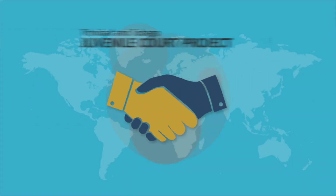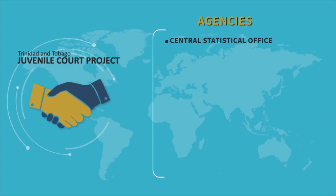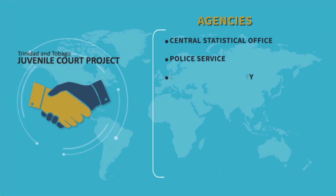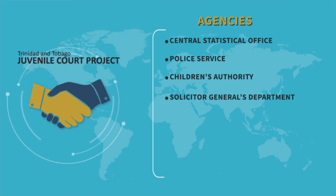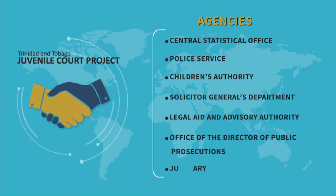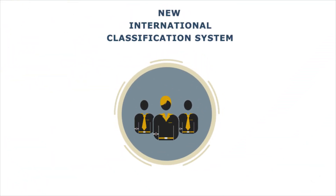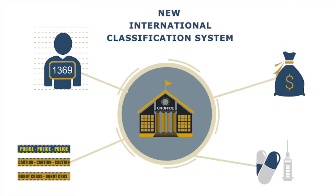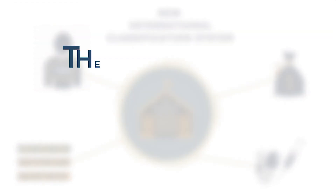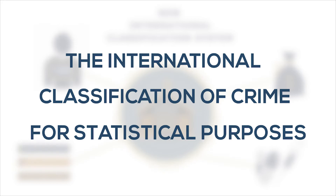Through the coordination of the Trinidad and Tobago Juvenile Court Project, agencies including the Central Statistical Office, Police Service, Children's Authority, Solicitor General's Department, Legal Aid and Advisory Authority, Office of the DPP and Judiciary began working towards a solution. One recommendation was made to use a new international classification system for categorizing crime data developed by the United Nations Office on Drugs and Crime, called the International Classification of Crime for Statistical Purposes, or simply the ICCS.